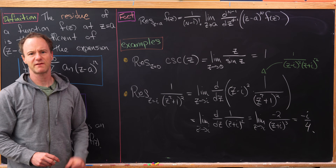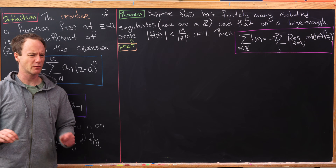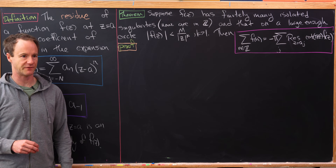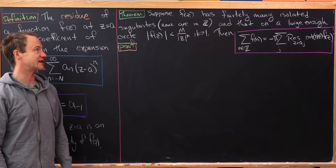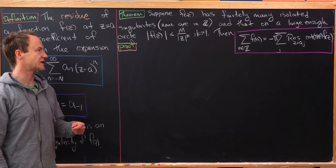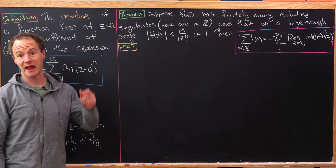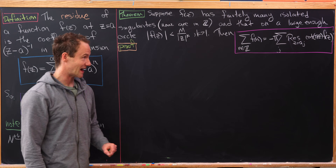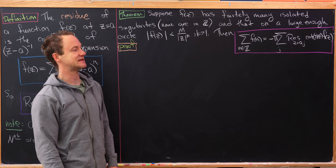Now that we've reviewed that material, let's look at our main result for today. This is a well-known result and we're using the notation and technique from something found on John Cook's website. Suppose f(z) has finitely many isolated singularities and none of them are integers, and on a large enough circle the modulus of f is less than M over |z|^k where k is bigger than 1. Then the sum over all integers n of f(n) equals minus π times the sum of all residues of cot(πz) times f(z).